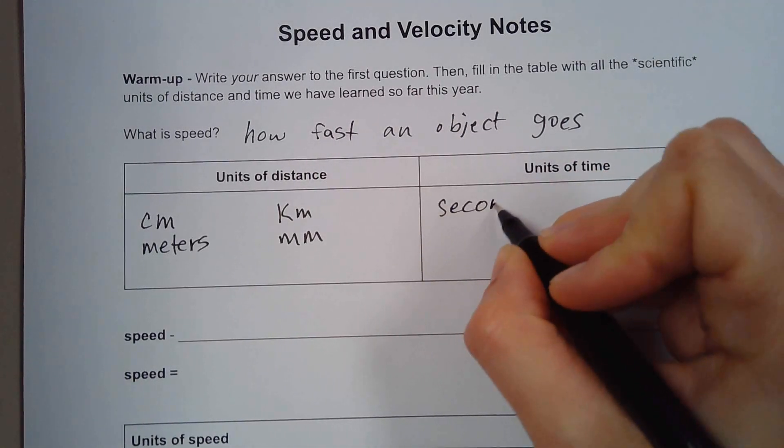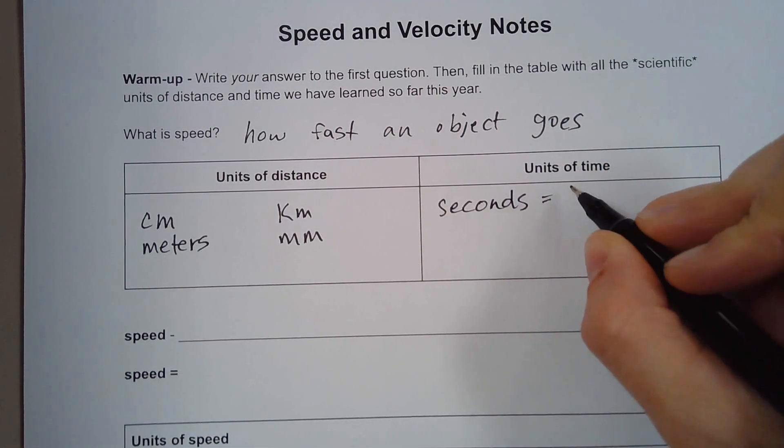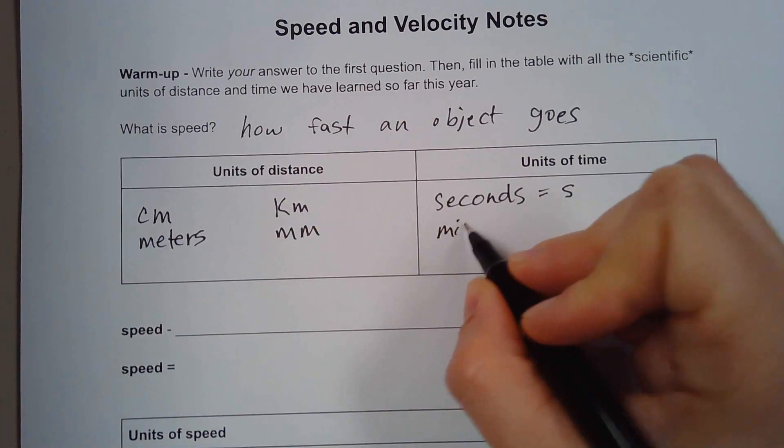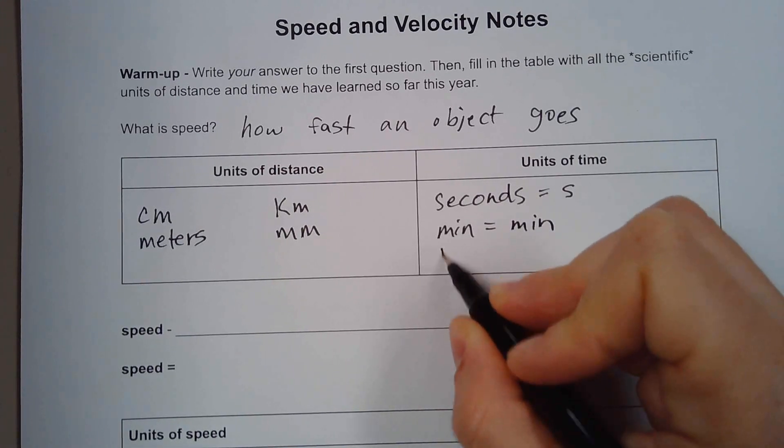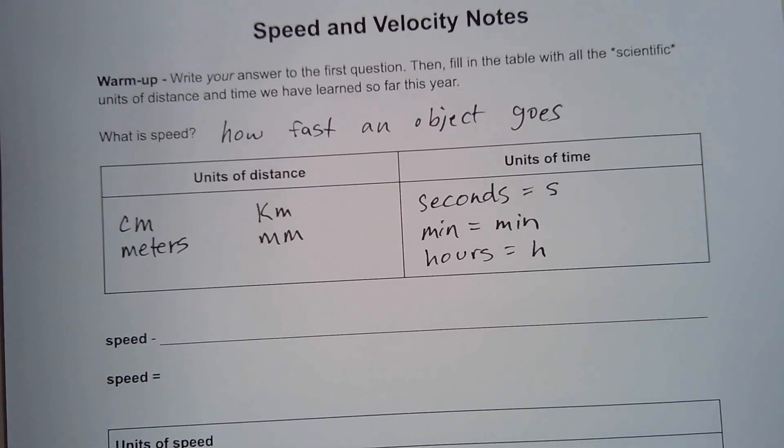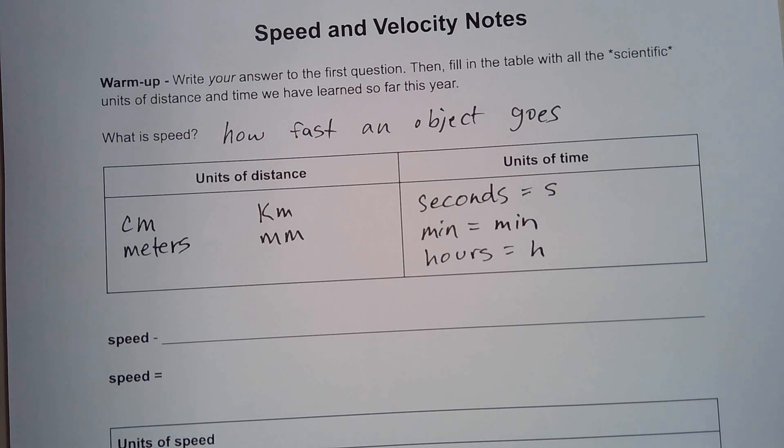We haven't talked about units of time. Seconds, which is an S symbol, just S, is seconds. Minutes, which would be M-I-N, or hours, which we can denote as H. We can use other units for time, but these are the ones that you'll most likely see.